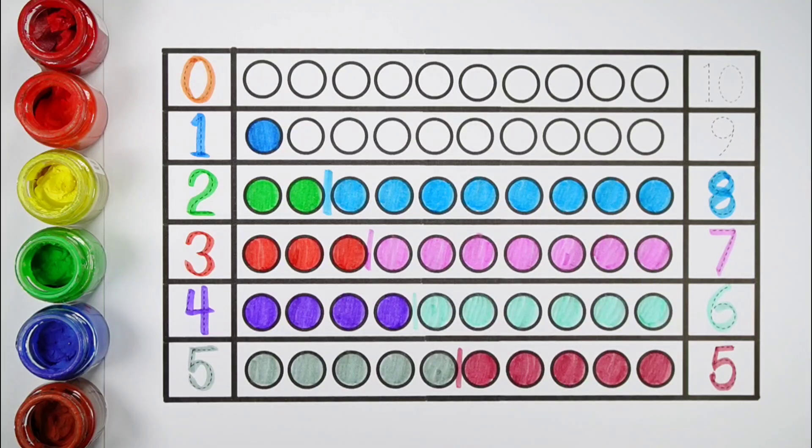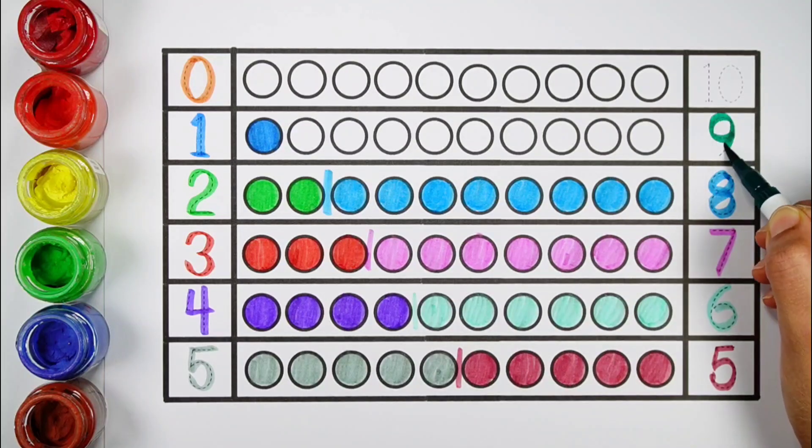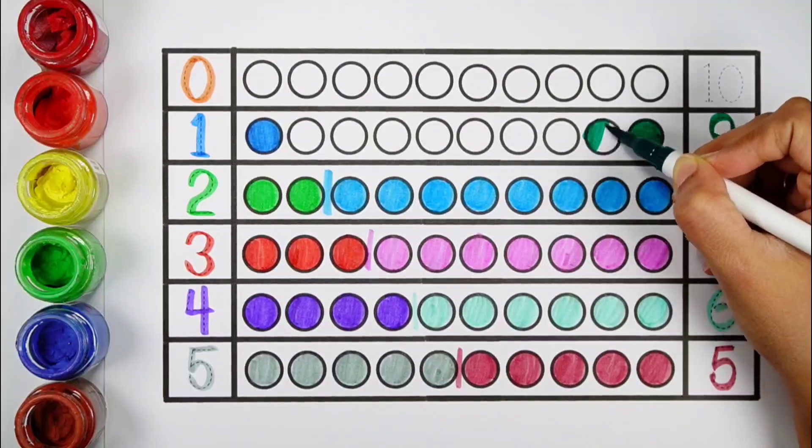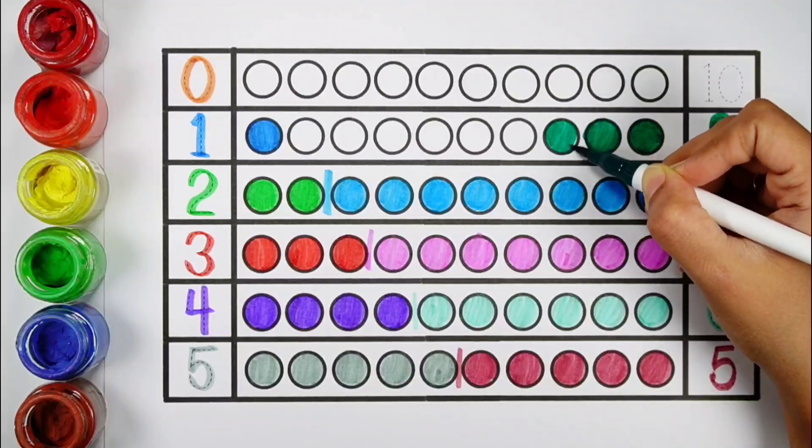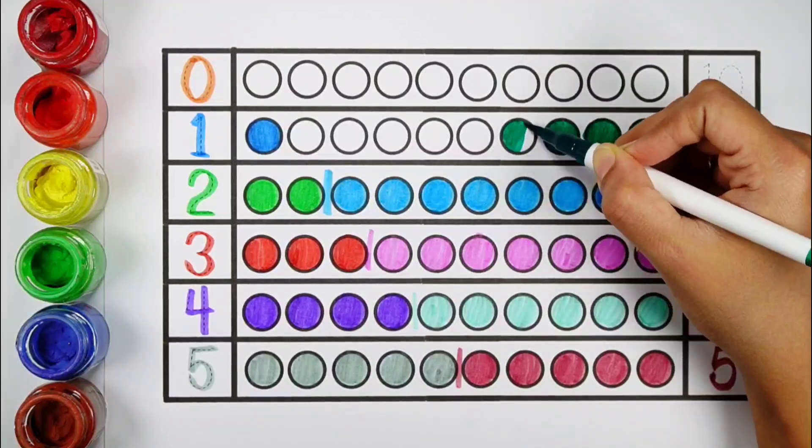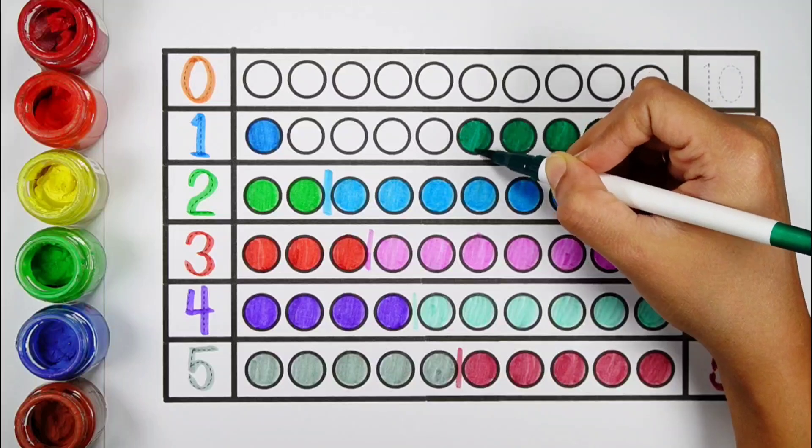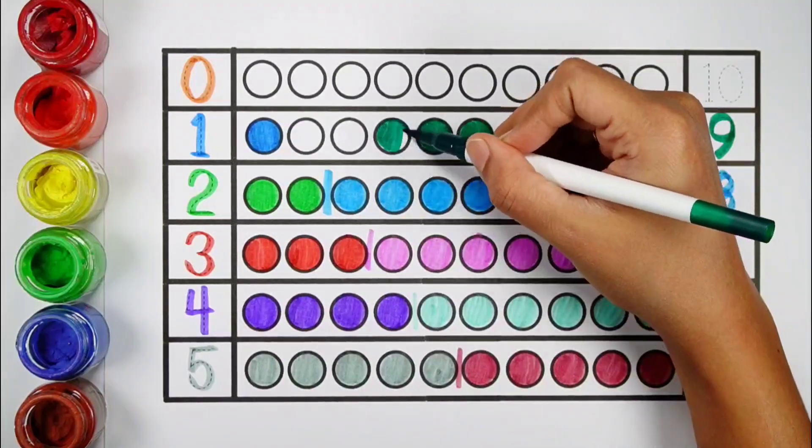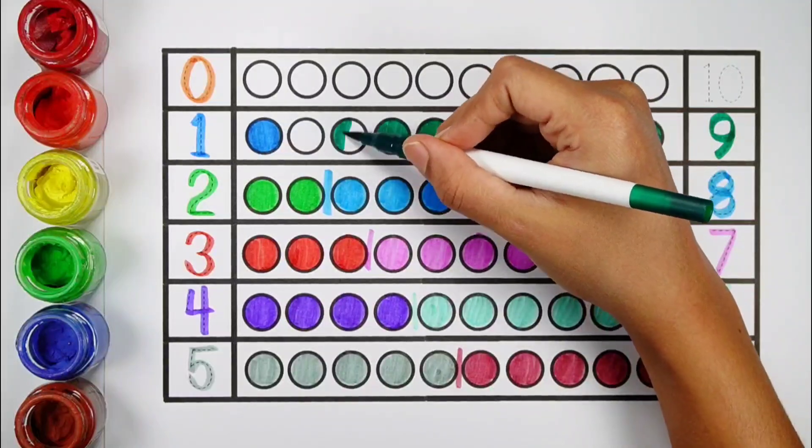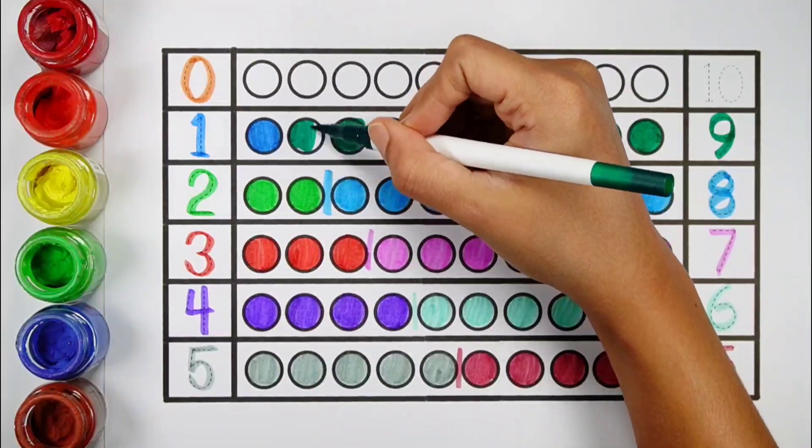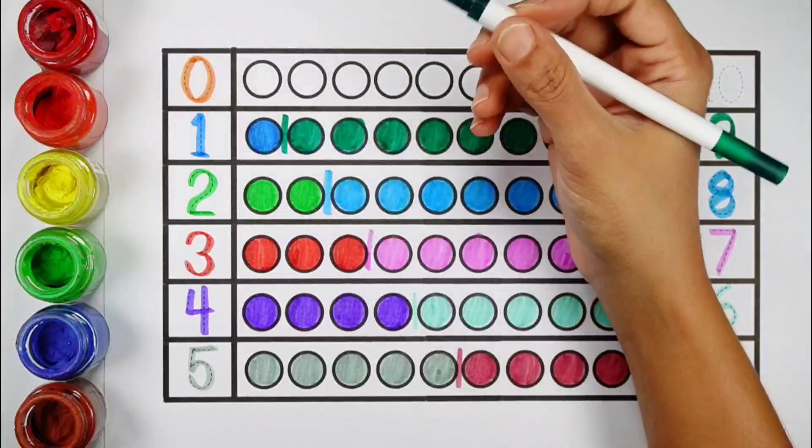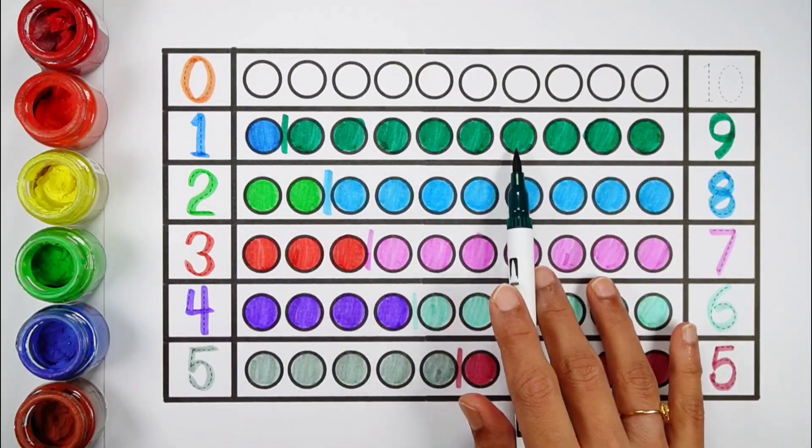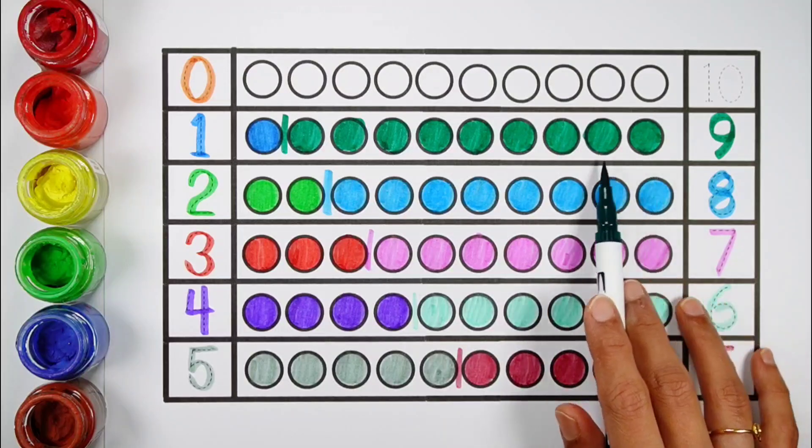1, 2, 3, 4, 5, 6, 7, 8, 9, 10, 10 bolts. 1, 2, 3, 4, 5, 6, 7, 8, 9, 10, 10 bolts.